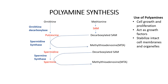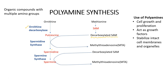One of the main special products of sulfur-containing amino acids is polyamines. They are organic compounds with multiple amino groups, useful for cell growth and to stabilize intact cell membranes and organelles. They also act as growth factors. Synthesis of polyamines occurs when ornithine decarboxylase acts on ornithine to form putrescine. Putrescine then forms spermidine with the help of spermidine synthase, which requires decarboxylated S-adenosylmethionine to form MTA or methylthioadenosine. Spermidine then forms spermine with the help of spermine synthase, which also requires decarboxylated SAM. Putrescine, spermidine, and spermine are the most common and most important polyamines.